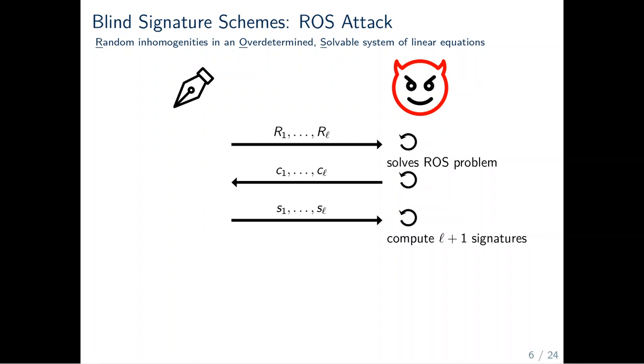From these L responses S1 to SL, the ROS attacker finally computes L plus 1 signatures. The bigger the value L, the more information the attacker receives and hence the easier the task of the adversary to break the scheme using the ROS attack. If L is too small, then the task of the ROS attacker becomes information theoretically hard.